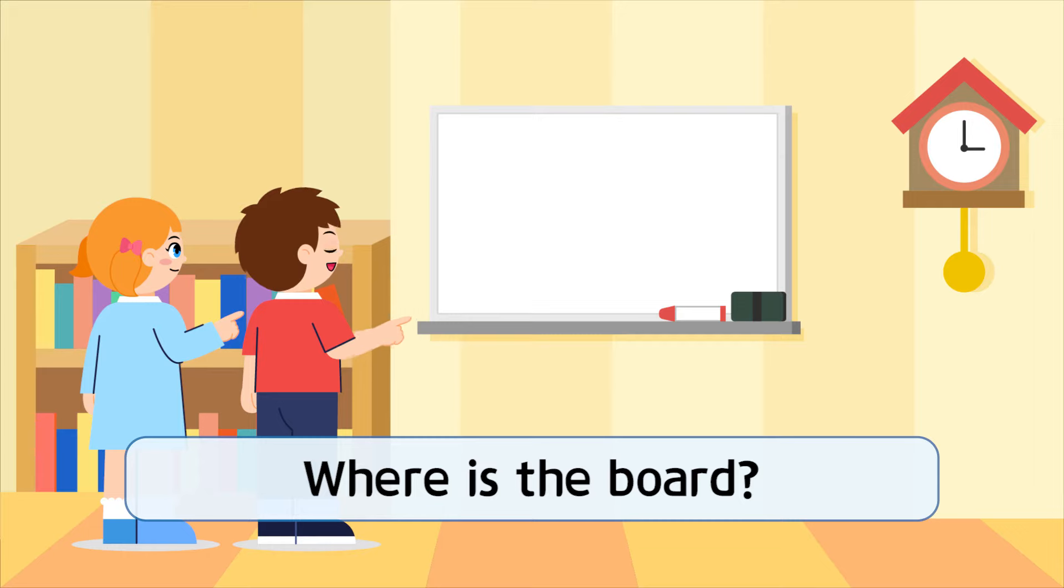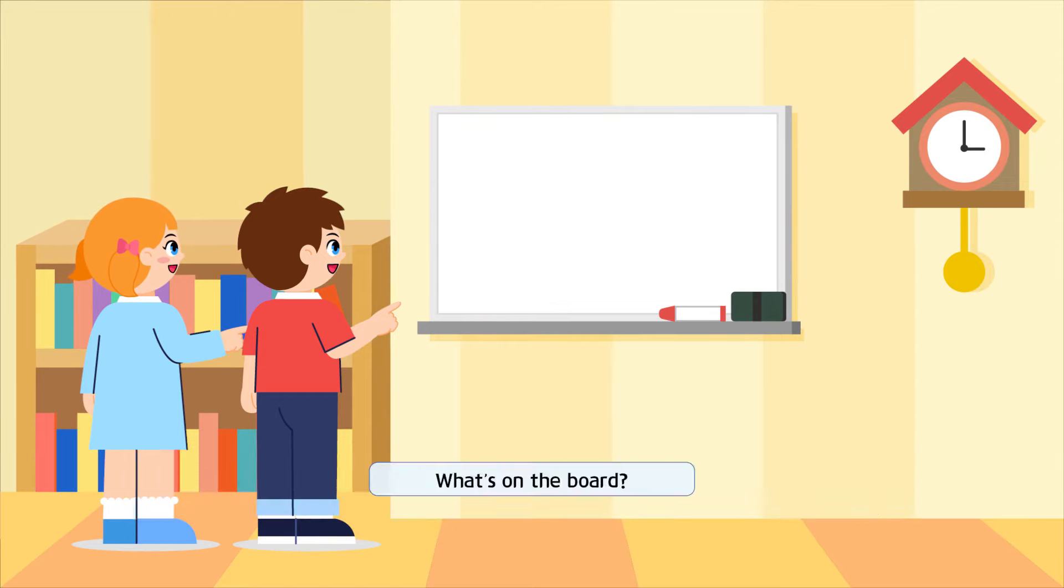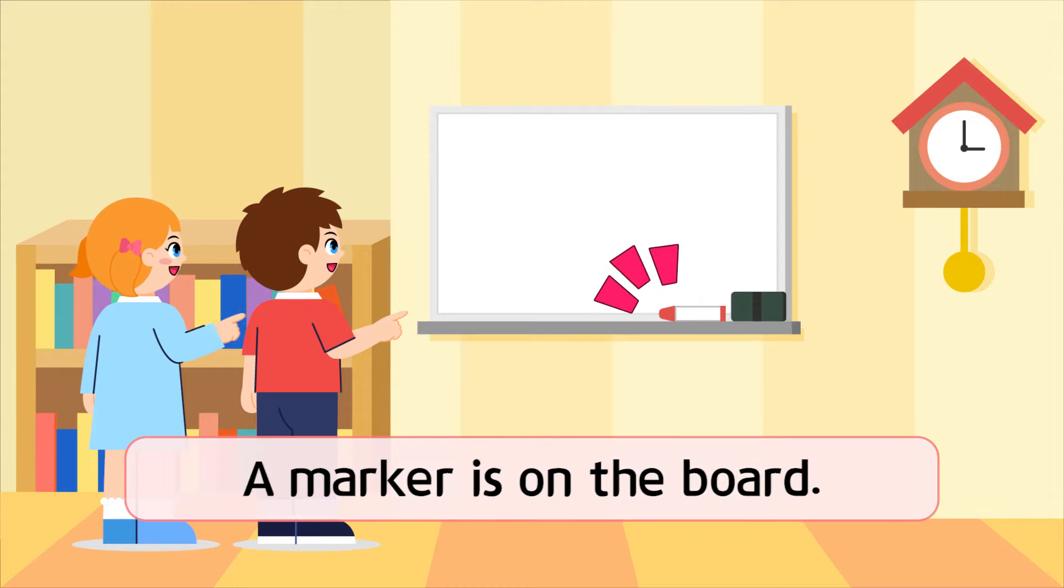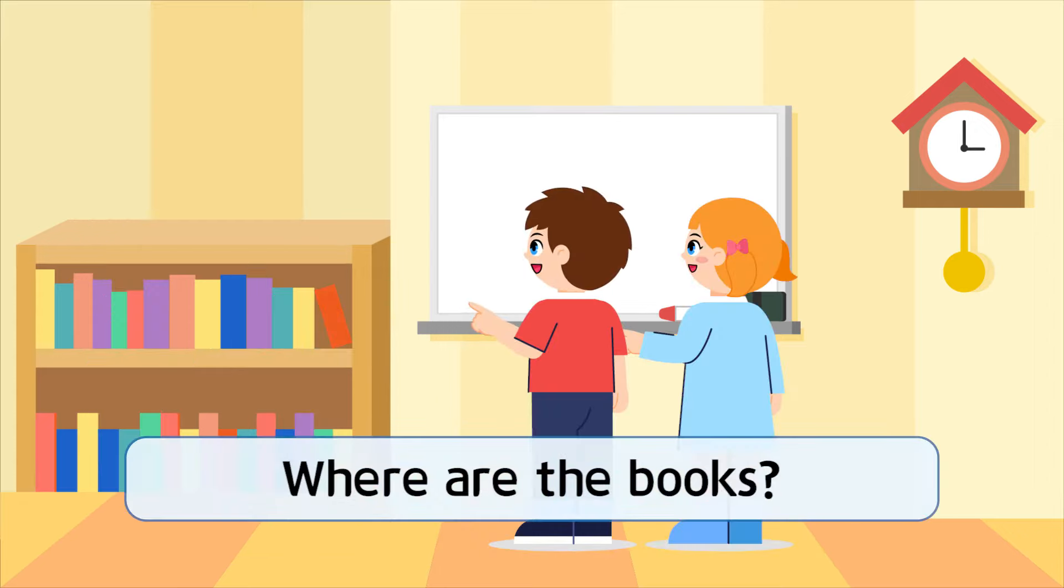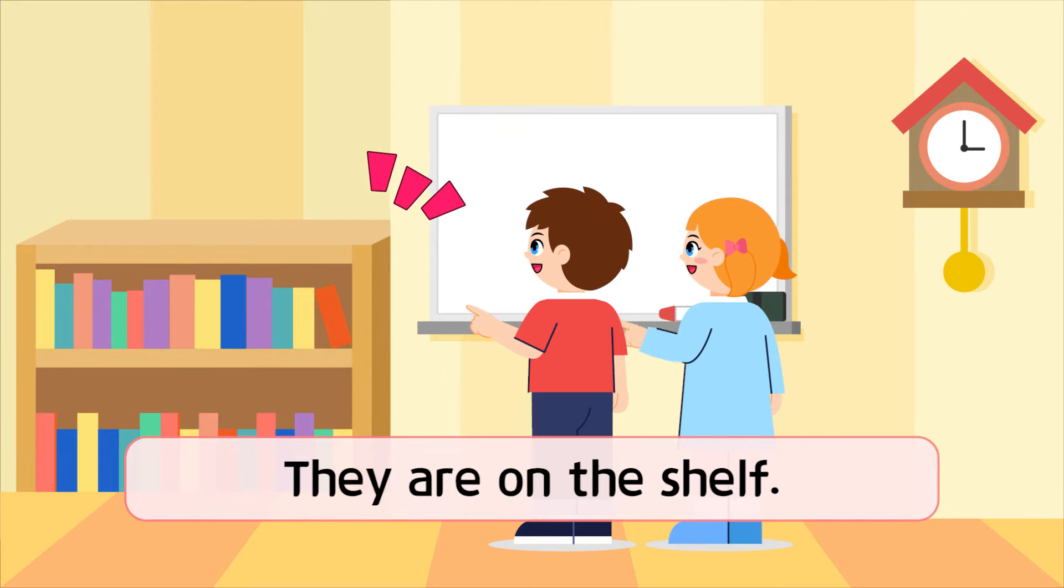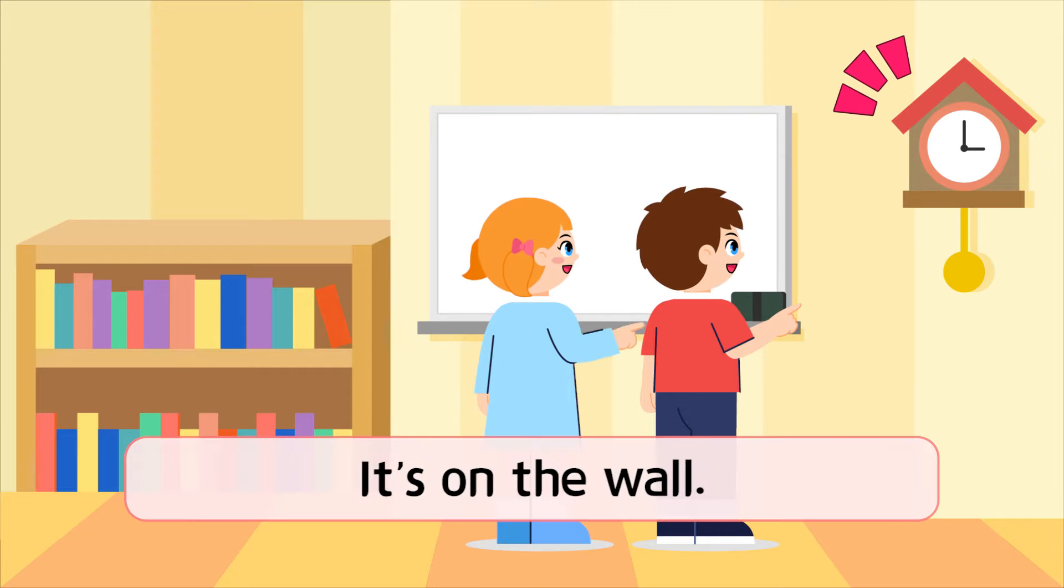Conversation. Where is the board? It's on the wall. What's on the board? A marker is on the board. Where are the books? They are on the shelf. Where is the clock? It's on the wall.